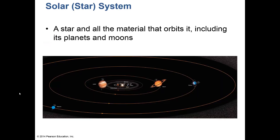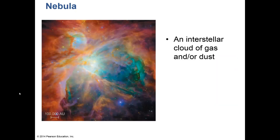Everything that goes around the Sun we call a solar system, including the Sun, Mercury, Venus, Earth, Mars, Jupiter, Saturn, Uranus, Neptune, dwarf planets like Ceres and Pluto — Pluto is no longer a planet, at least for now — and comets, dust, asteroids, and everything else.